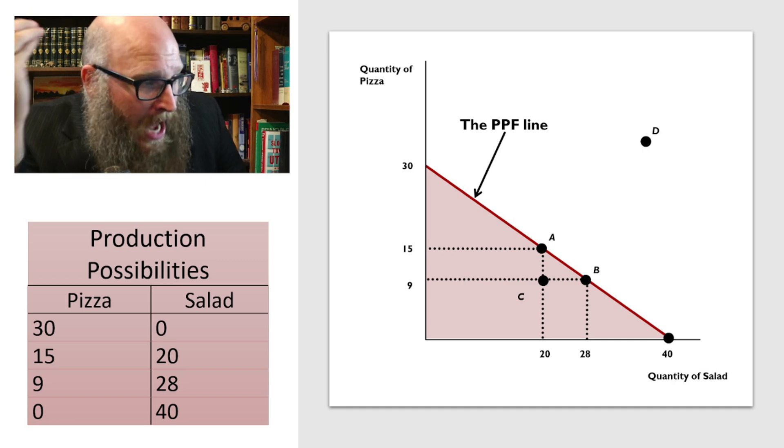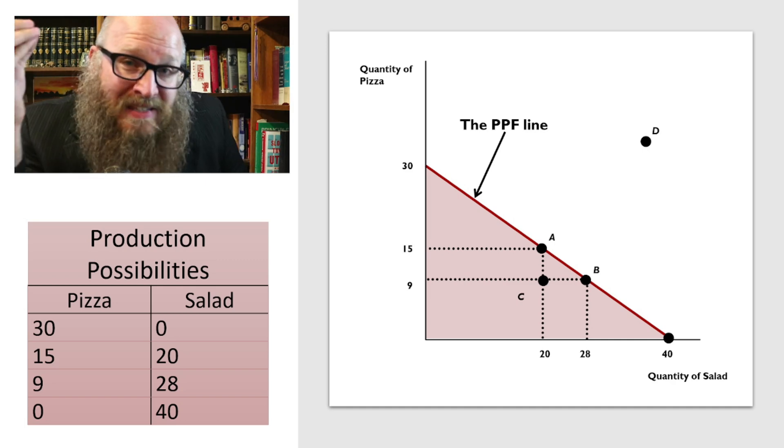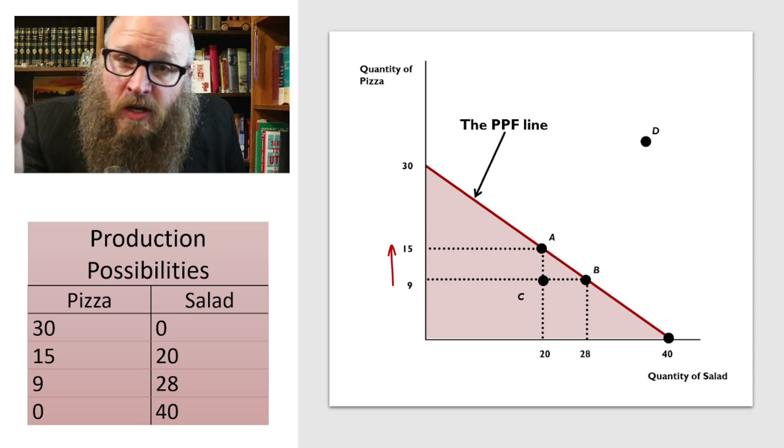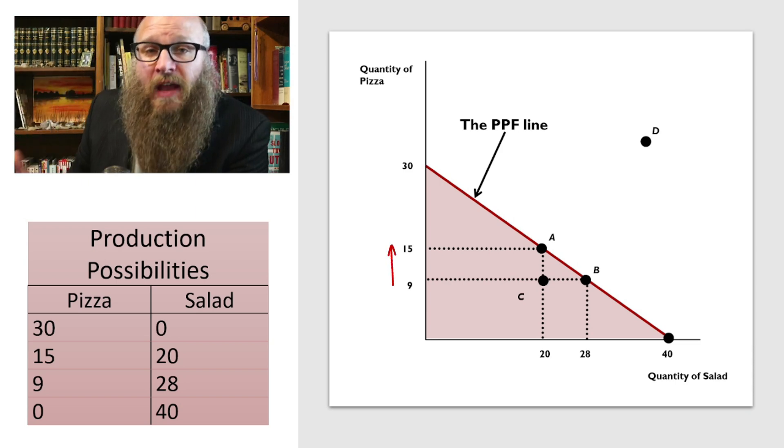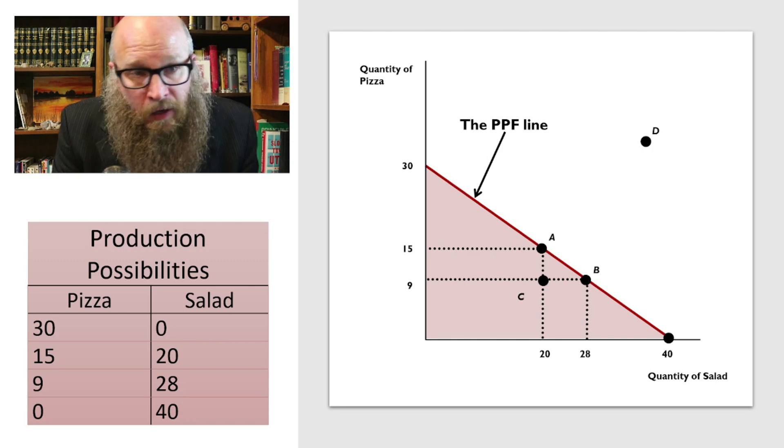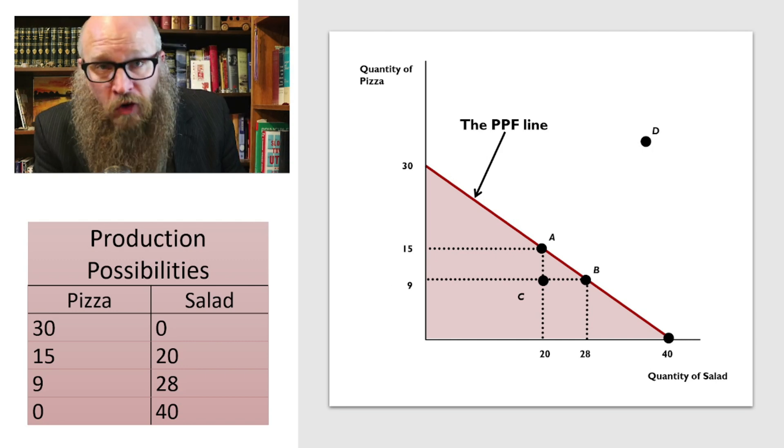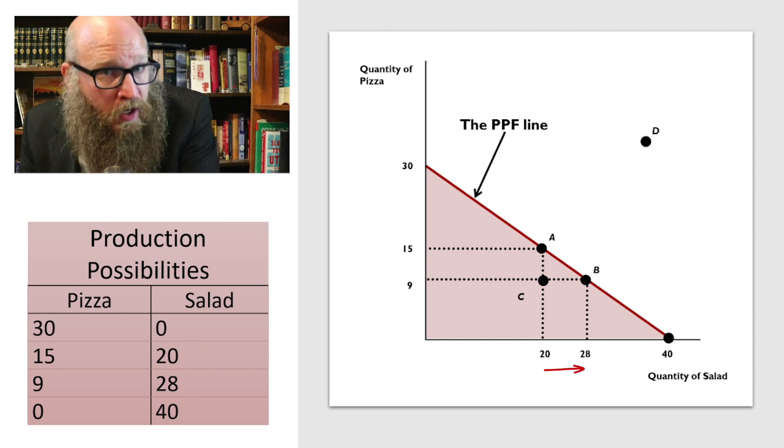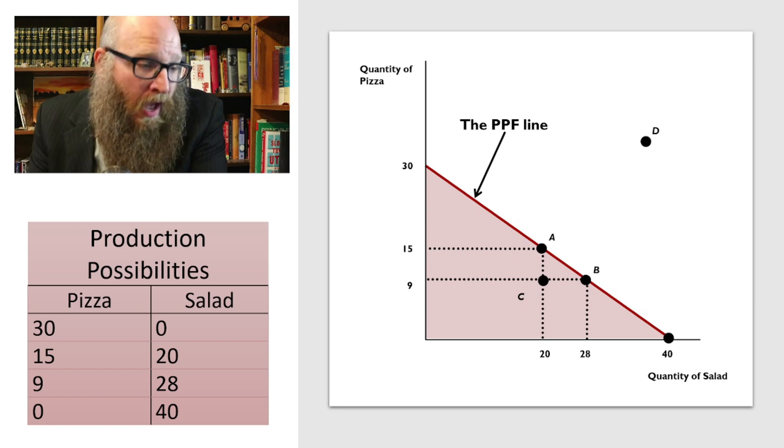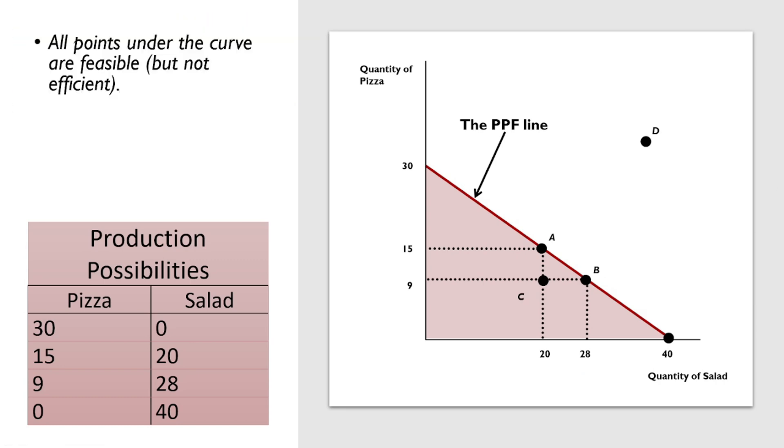And dot C is interesting because it means we're underperforming. If you're creating 9 pizzas and 20 salads, we could increase the production of pizza without having to take any resources away from salad. Likewise, if we wanted to just produce 9 pizzas, we can increase the production of salads without sacrificing anything from pizza.